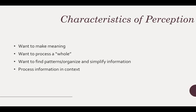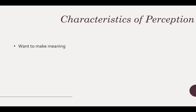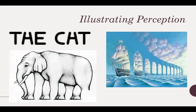We process information in context, and that's what you see in the cat example. You see the H being processed as an H within the context of the word 'the,' and the A being processed as an A within the context of the word 'cat,' even though on paper these two stimuli look identical. Likewise with the elephant — we process it in context. We know that elephants have four legs, so automatically we see four legs, even though that may not be exactly what's depicted in the image.